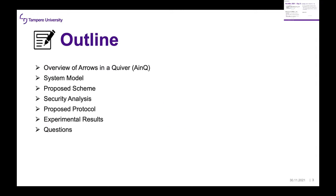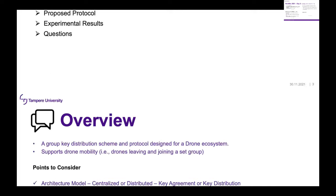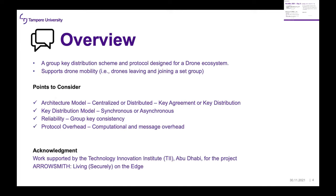Arrows in a Quiver, shortened to AI&Q, is a certificate-less group key distribution scheme purposely designed for the drone ecosystem. It is easily extendable to resource-constrained devices and supports drone mobility — drones are able to leave and join a group. We consider both a centralized and a distributed key agreement or key distribution protocol. A key agreement protocol has multiple devices collaborate to produce a key, while a key distribution protocol has one entity generate a key and distribute it to members.